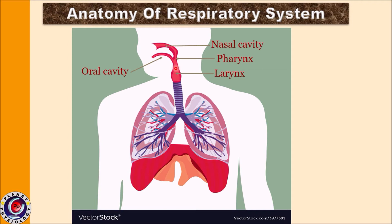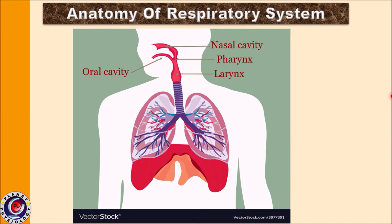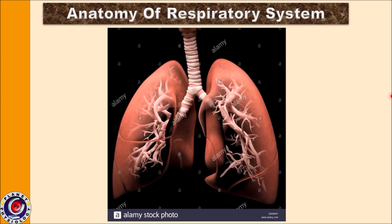The pharynx continues downwards and divides into two. The anterior portion is called the larynx and the posterior is called the esophagus. The esophagus is concerned with the digestive system, so we concentrate only on the larynx. Normally it is kept in an open state; only when you are swallowing does the larynx get closed by a structure called the epiglottis. The larynx contains muscles which form vocal cords, and these vocal cords help in the act of phonation, which is closely concerned with respiration.